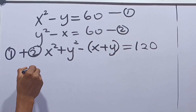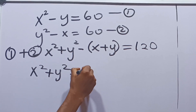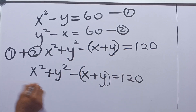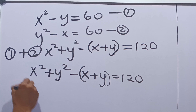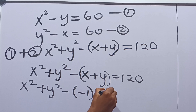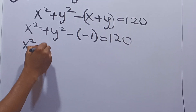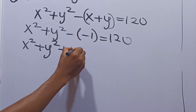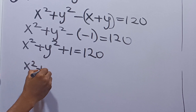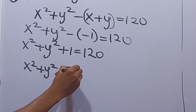We have x squared plus y squared minus x plus y equals 120. Recall that our x plus y is minus 1. So we have x squared plus y squared minus into minus 1 is equal to 120. Therefore, x squared plus y squared plus 1 equals 120, so x squared plus y squared equals 119.